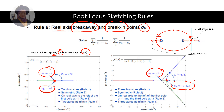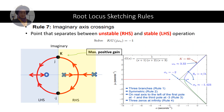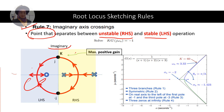A detailed example for rule 6 will be shown in the next video. Rule 7 is the imaginary axis crossing. This is the point that separates the unstable condition from the stable condition of the system. The root locus travels across this imaginary axis point so that the system condition changes — for example from stable to unstable. An example for rule 7 will also be shown in the next video.